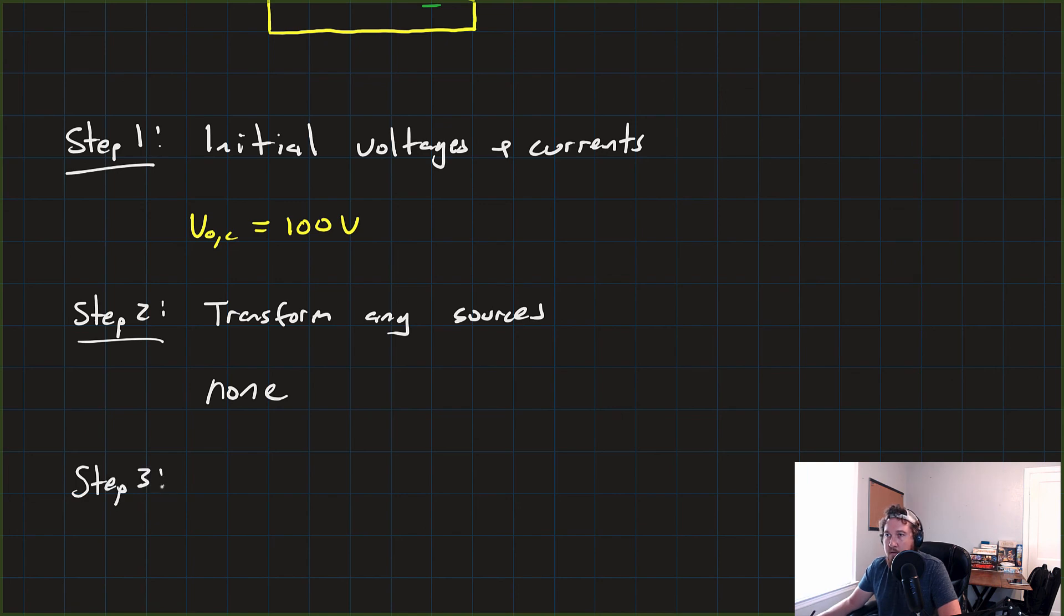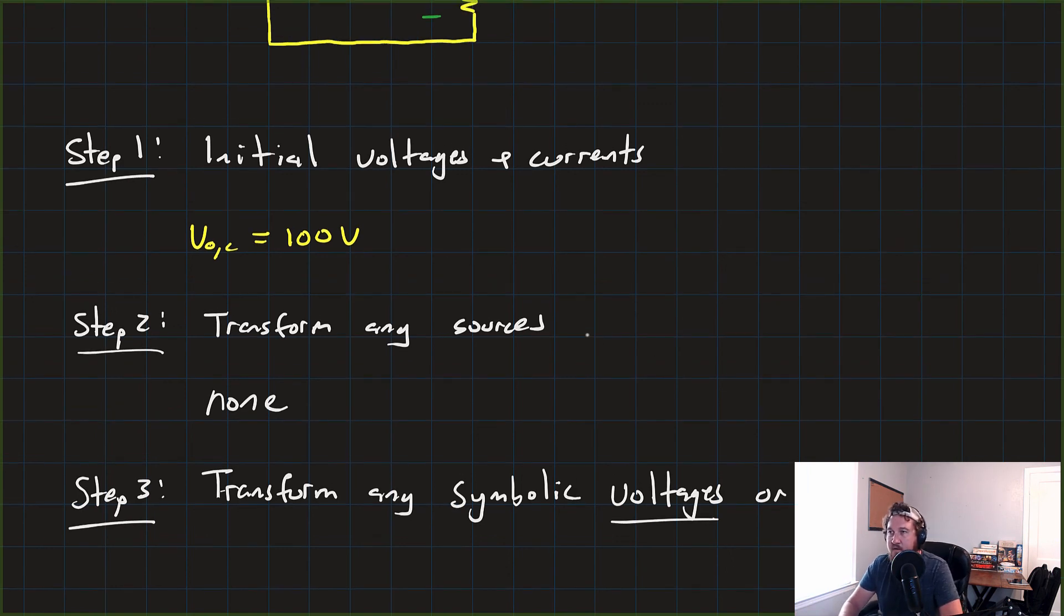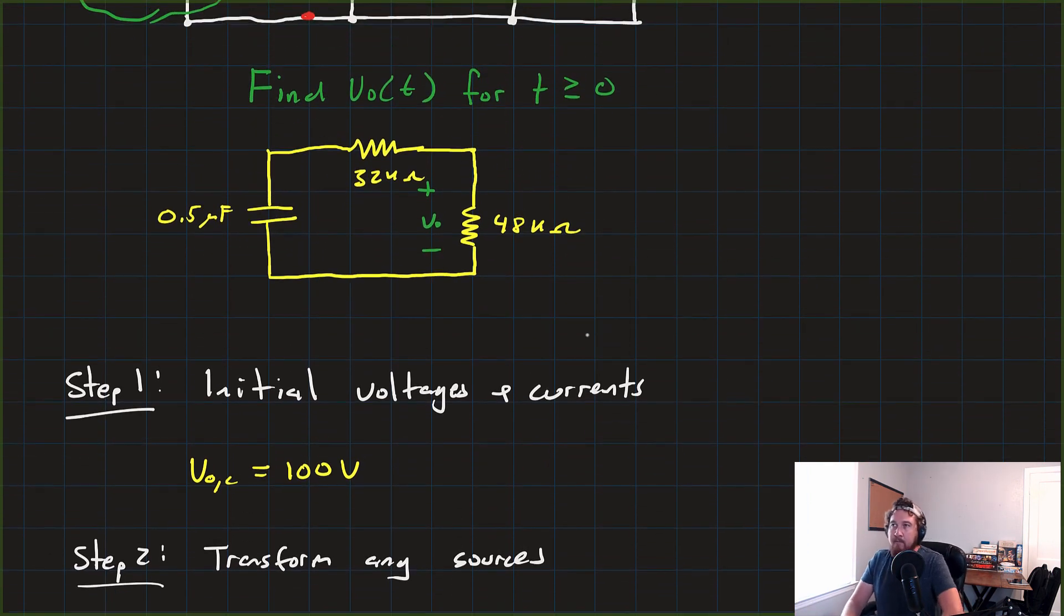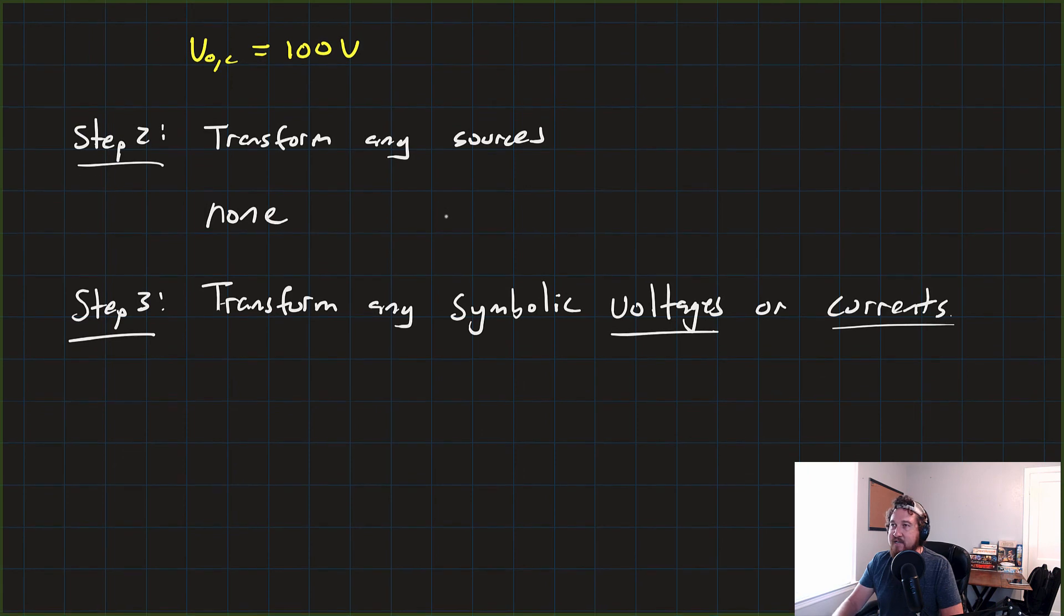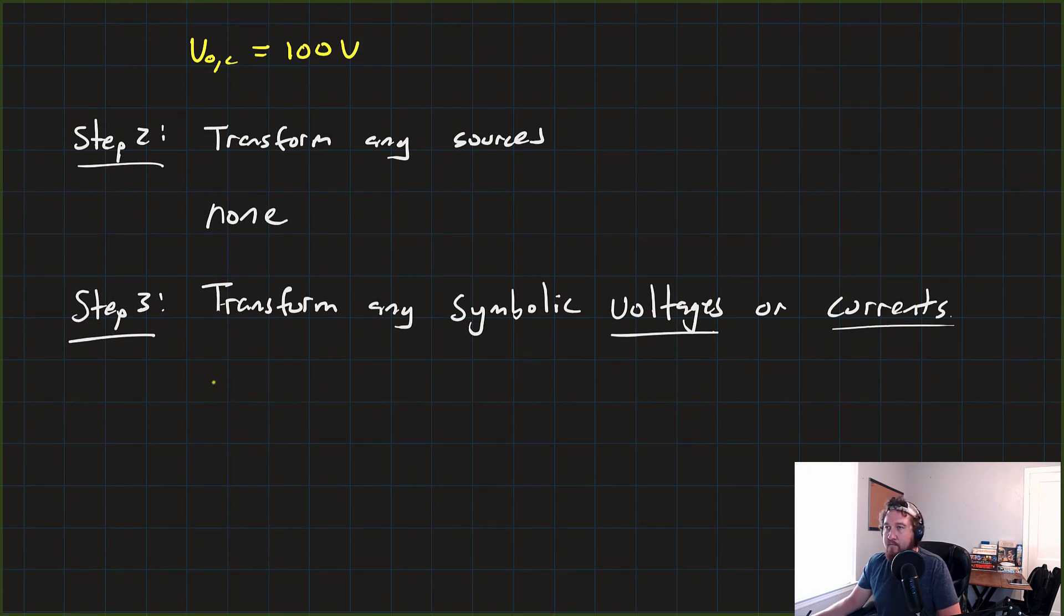Step three wants us to then convert or transform any symbolic voltages or currents. Now, in a previous lesson, I think I sort of misunderstood what the textbook was asking for when it said transform any symbolic voltages or currents, because in this example, we actually do want to transform this V-naught. It's sort of a silly step, but, you know, we like to be sort of thorough, right?